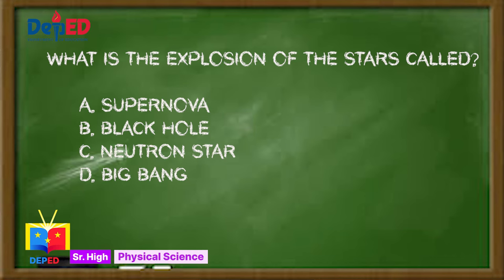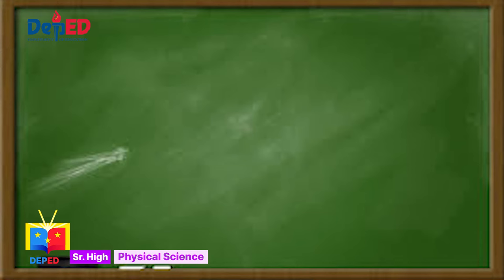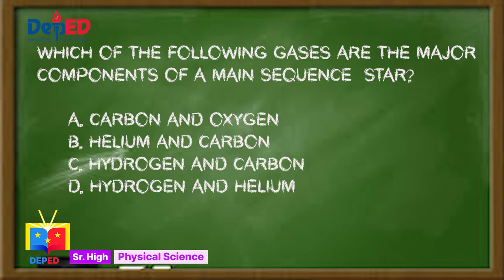Question number two: Which of the following gases are the major components of a main sequence star? A. Carbon and oxygen, B. Helium and carbon, C. Hydrogen and carbon, or D. Hydrogen and helium. The answer is D. Hydrogen and helium.